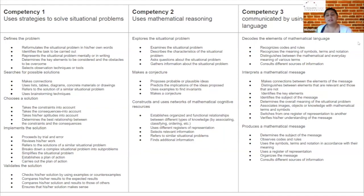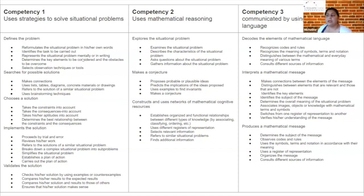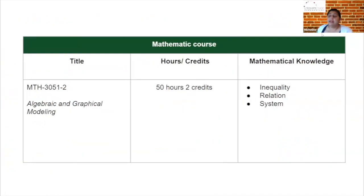Competency 3 is about mathematical language - are they competent in using mathematical language? These are the three competencies we evaluate in any math exam. This next document I put together for you is what we call the manifestations of competencies - a more detailed list of what's in the key features. For Competency 1, under 'defines a problem,' the manifestation tells us exactly what we look for: is the student capable of reformulating the situation in their own words, are they able to identify the task to be carried out?